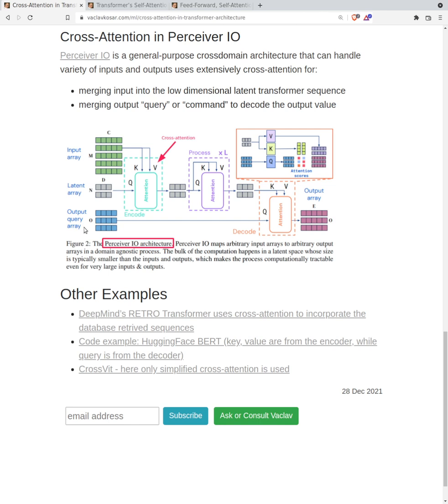You can train how the command should look like and then you cross attend. Again, with the main latent sequence which will produce an output array. This way you can use cross attention - you cross attend the command with the latent sequence that produces the output.